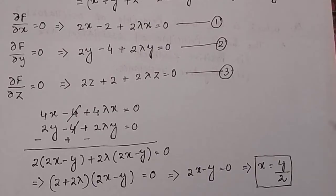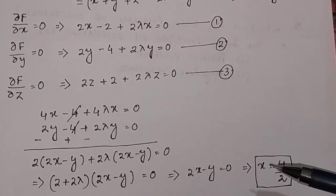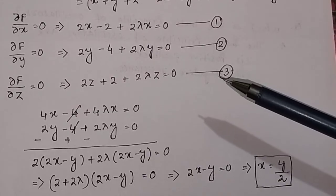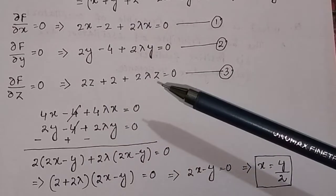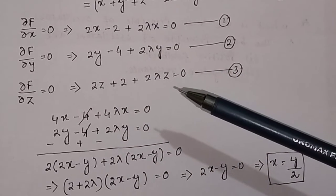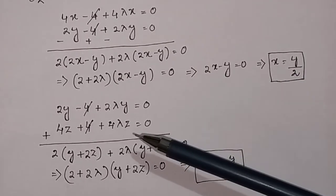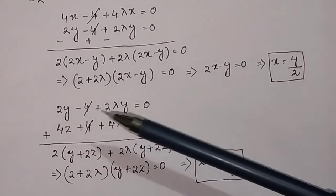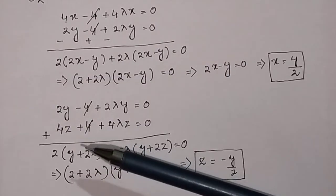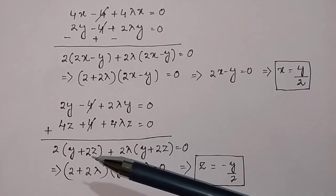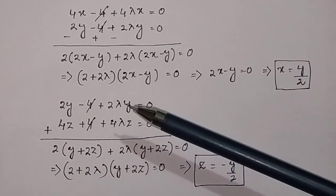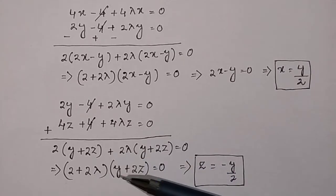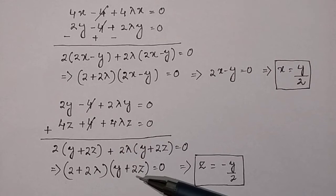Now we find a relation between y and z by working with equations 2 and 3. Multiply equation 3 by 2: 4z + 4 + 4λz = 0, then add to equation 2. The 4's cancel and factoring gives (2 + 2λ)(y + 2z) = 0. Setting y + 2z = 0 gives z = -y/2.